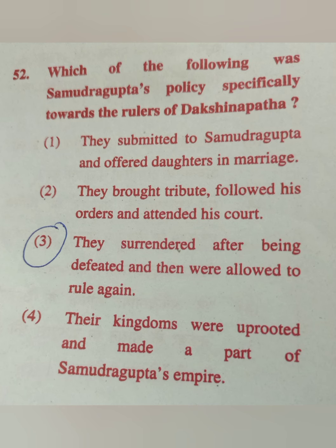Question 52: Which was Samudragupta's policy specifically towards the rulers of Dakshinapatha? Option 1: They submitted and offered daughters in marriage. Option 2: They brought tribute and attended his court. Option 3: They surrendered after being defeated and were allowed to rule again. Option 4: Their kingdoms were uprooted and made part of Samudragupta's empire. The correct answer is option 3.